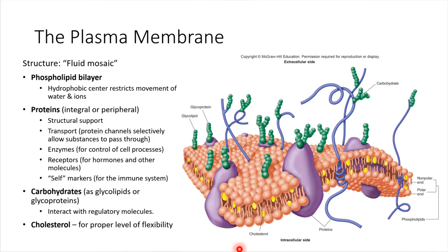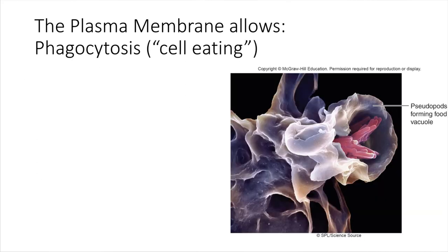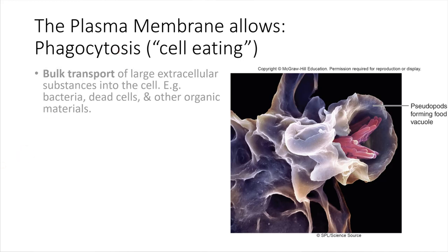The fact that the plasma membrane is able to move — it is a fluid mosaic — the fact that things can move and slide around allows some special things to take place. This is what allows, in some cells, phagocytosis. What this word means is cell eating. This is referring to how some cells can take in substances from the outside. So bulk transport — this is one way that bulk transport can happen.